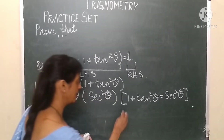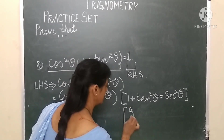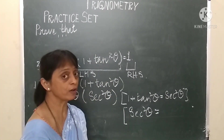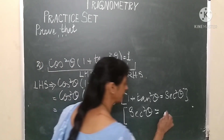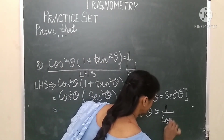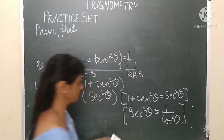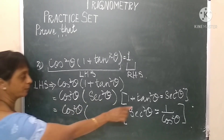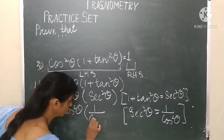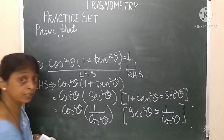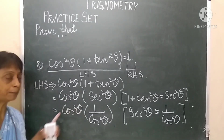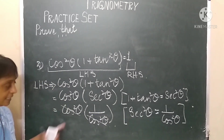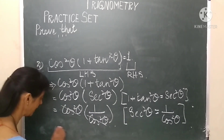Now, what is sec²θ? Since secθ is the inverse of cosθ, that is 1/cosθ, sec²θ equals 1/cos²θ. Substituting, we have cos²θ × (1/cos²θ). Since the bracket indicates multiplication, cos²θ and cos²θ cancel each other out, leaving us with only 1.